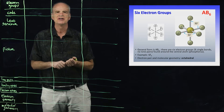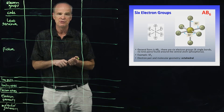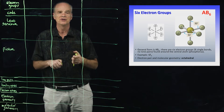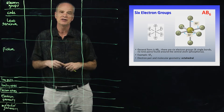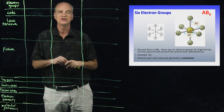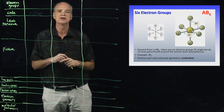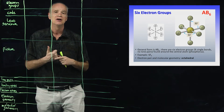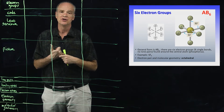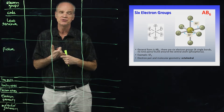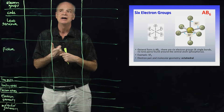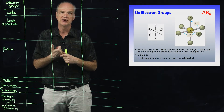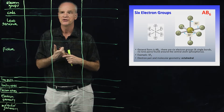Welcome back to chemistry. We're going to continue on through our tour of molecular structures, and now we're going to consider molecules where the central atom has six electron groups.